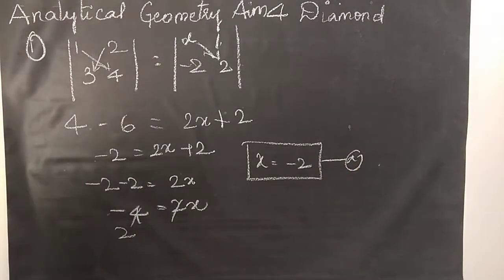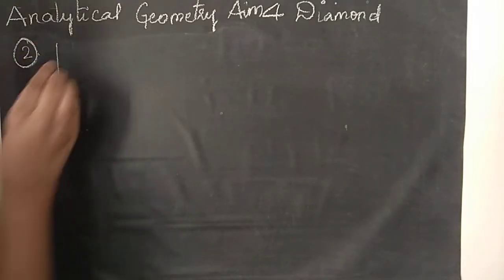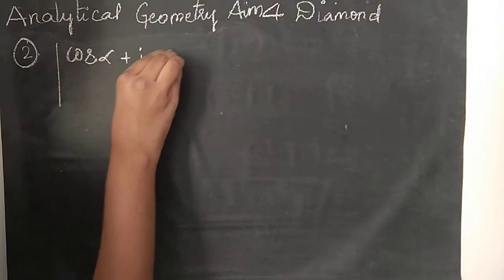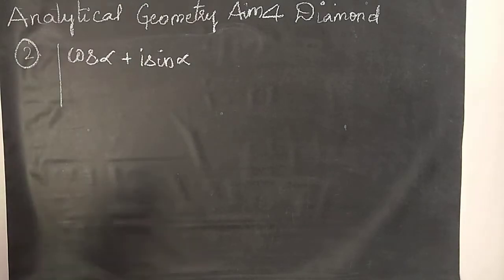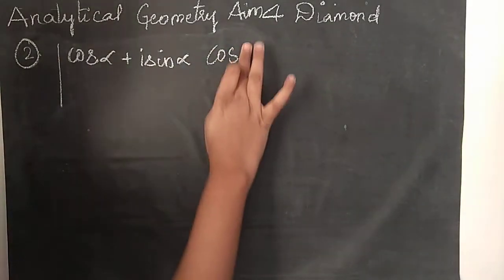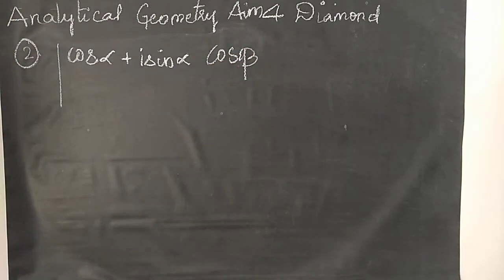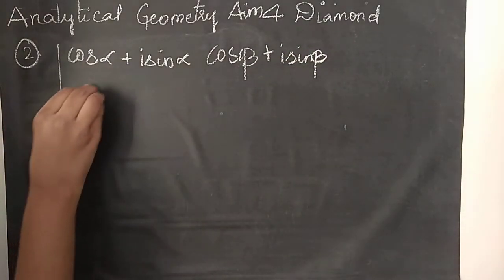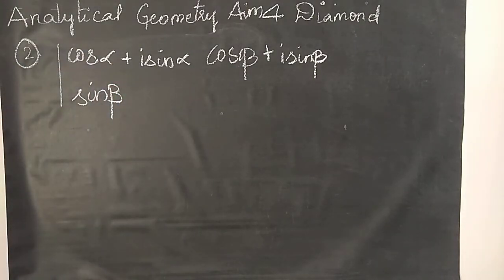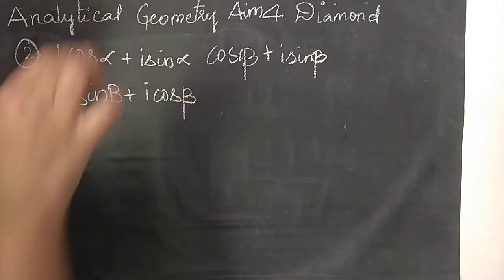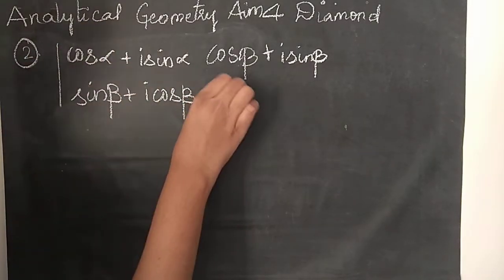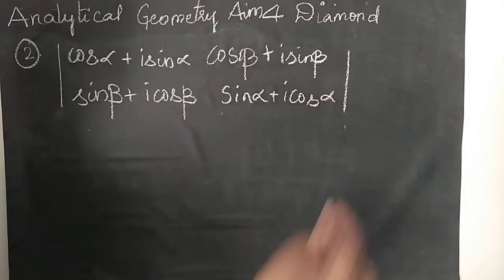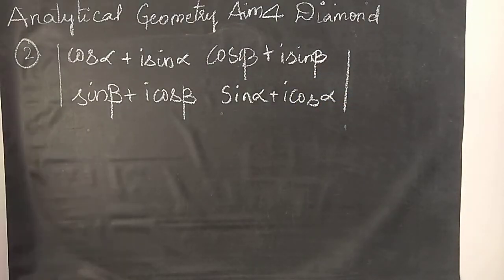Now we will see the second question. The question is: cos alpha plus i sine alpha, cos beta plus i sine beta, sin beta plus i cos beta, and sin alpha plus i cos alpha. The question is only looking very lengthy, but let's solve it.